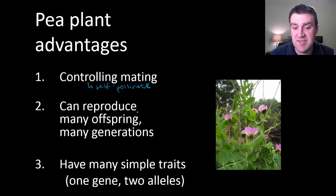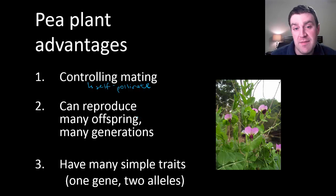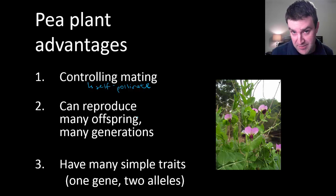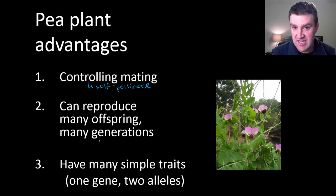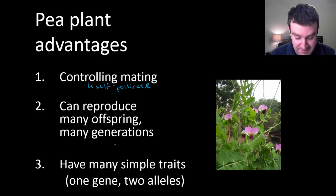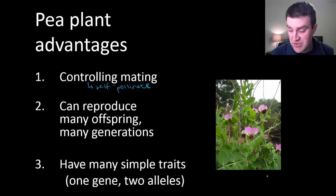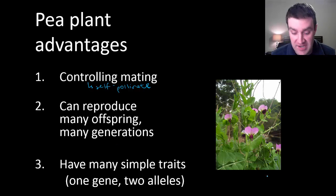Another advantage of pea plants is that you can generate a large sample size. If you're trying to find mathematical patterns, it helps to have many, many plants to look at and many generations to study in a lifetime. Additionally, pea plants have many simple traits where one gene controls the trait and there are just two possibilities for that trait.